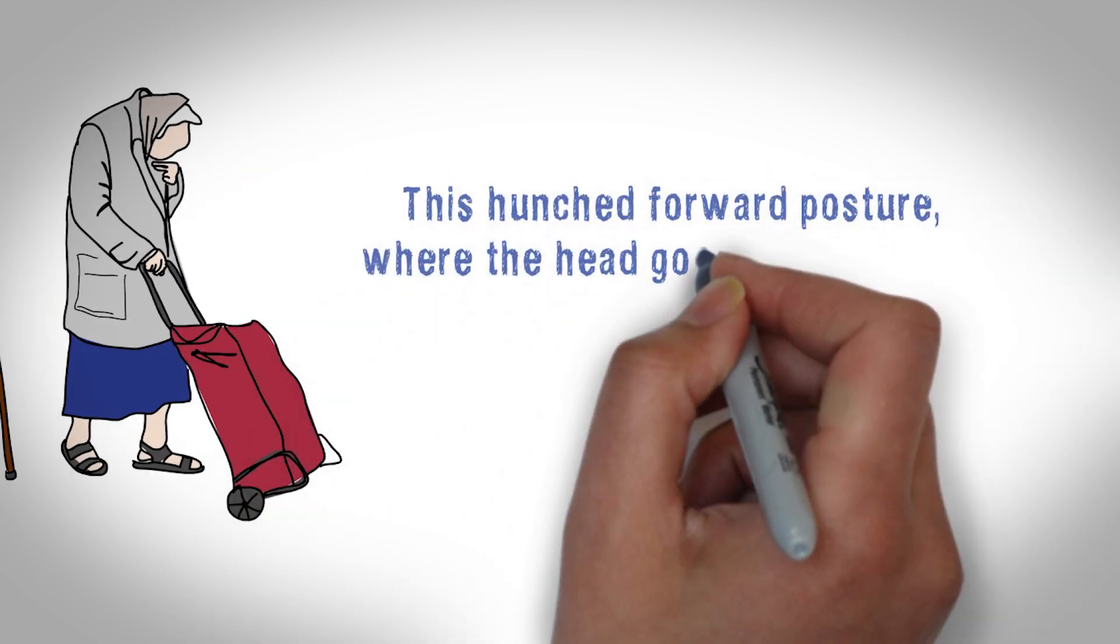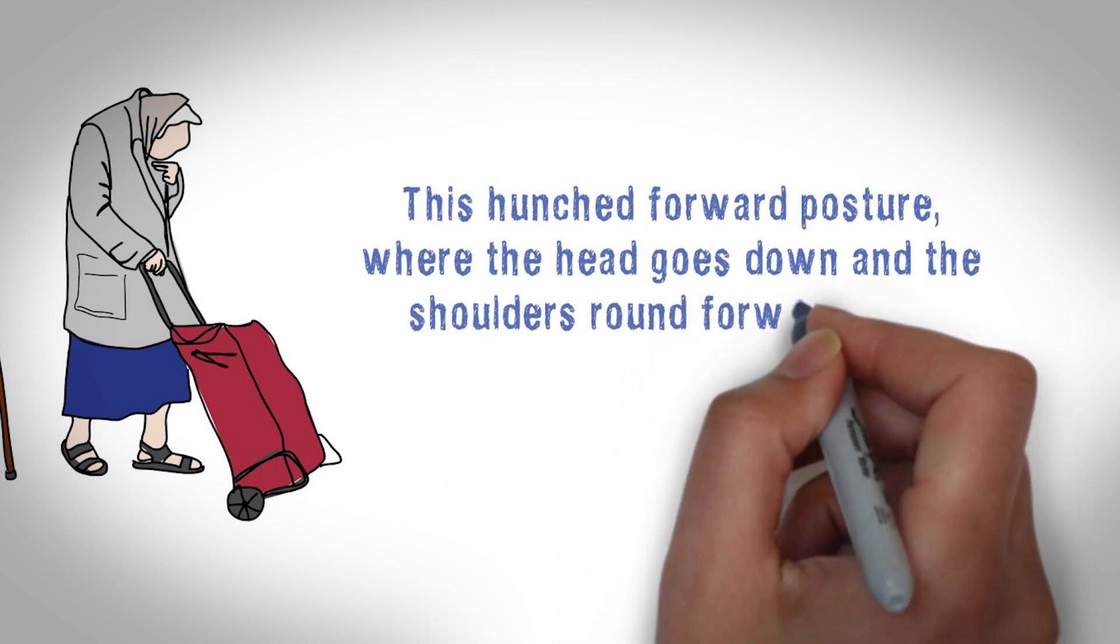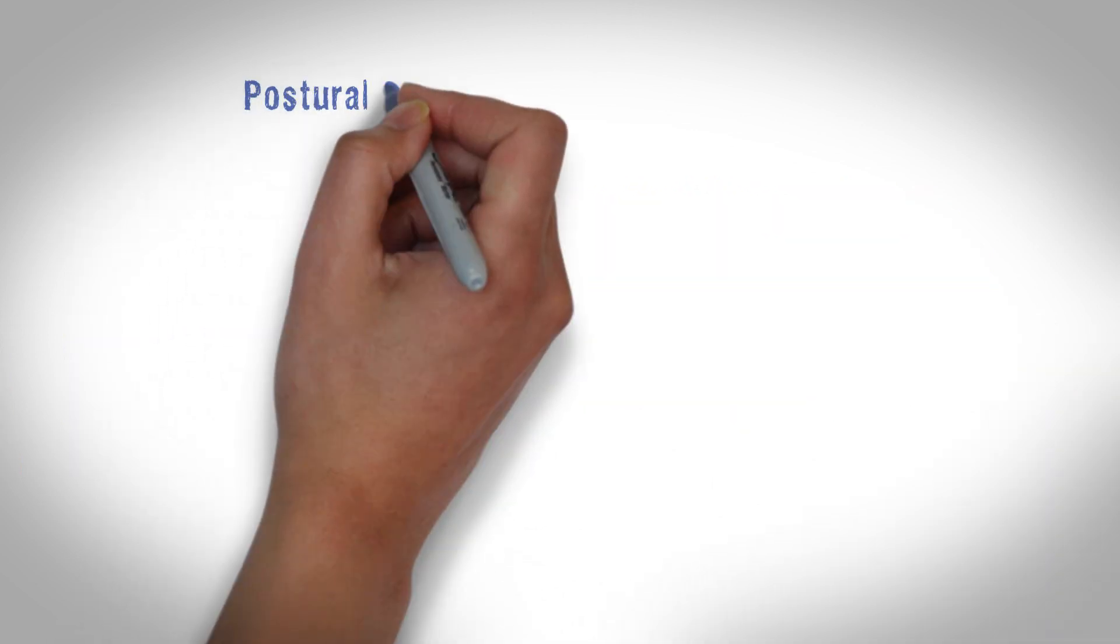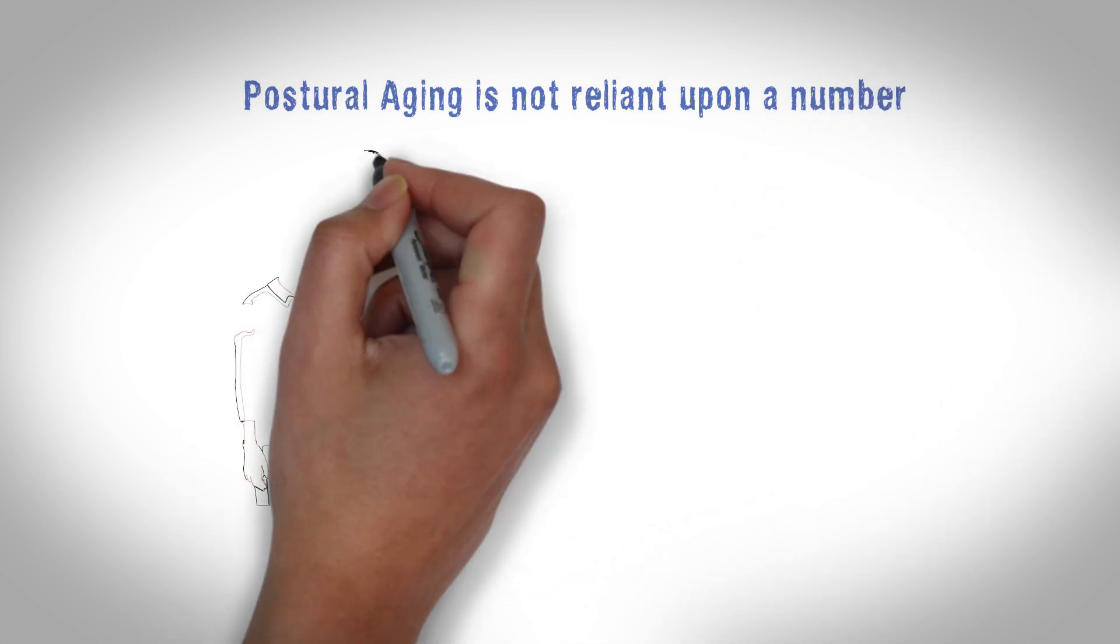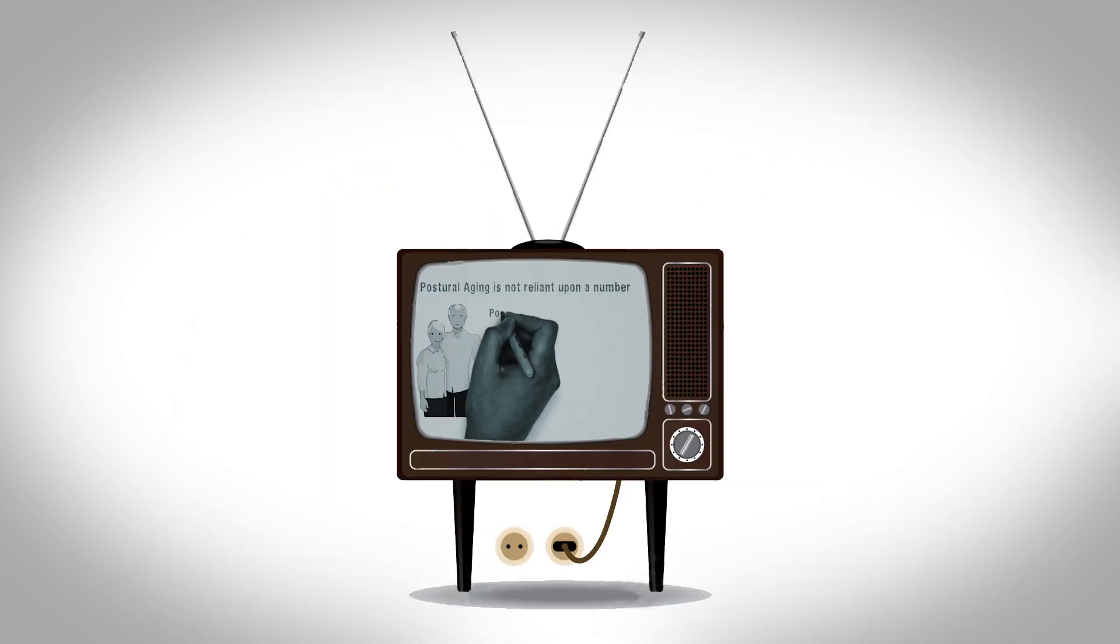Postural aging is not reliant upon a number. Many elderly individuals who take care of their bodies have great posture. Postural aging means that you have postural collapse when performing daily activities.